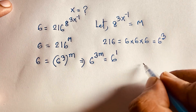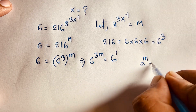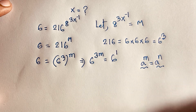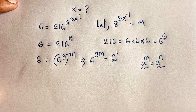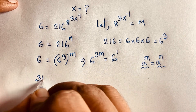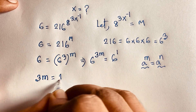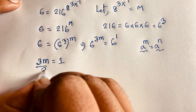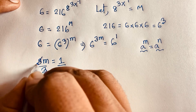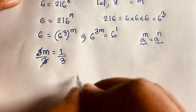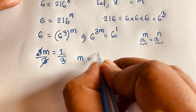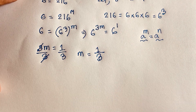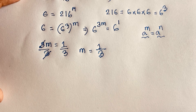So 3m is equal to 1 — since 6 has exponent 1. According to exponential law, if a to the power m equals a to the power n, then both exponents are equal. So 3m equals 1. I divide both sides by 3, and we find m is equal to 1 over 3.